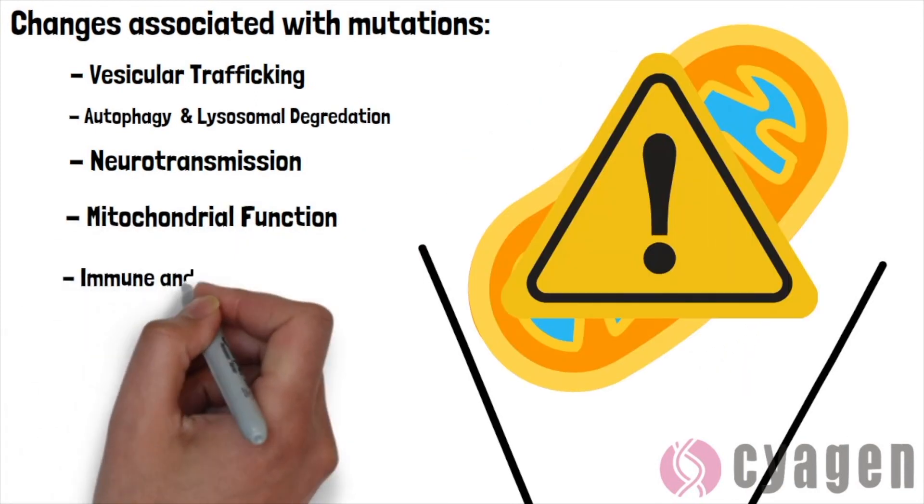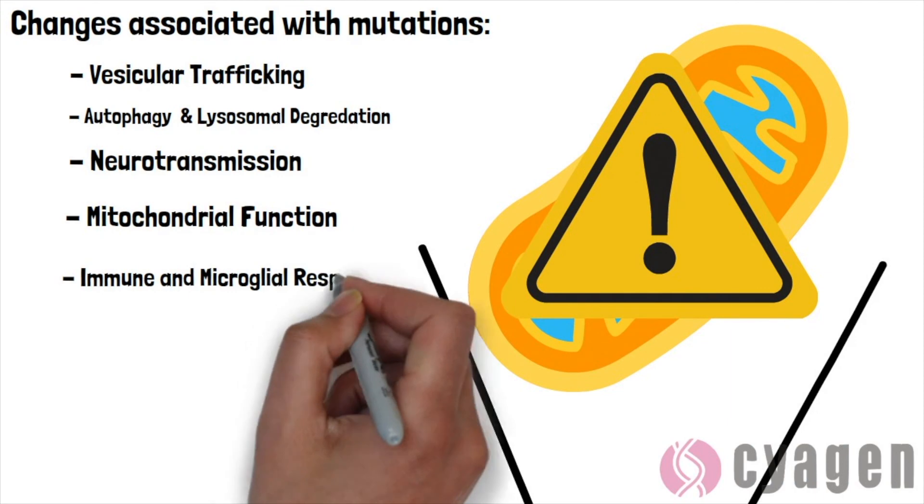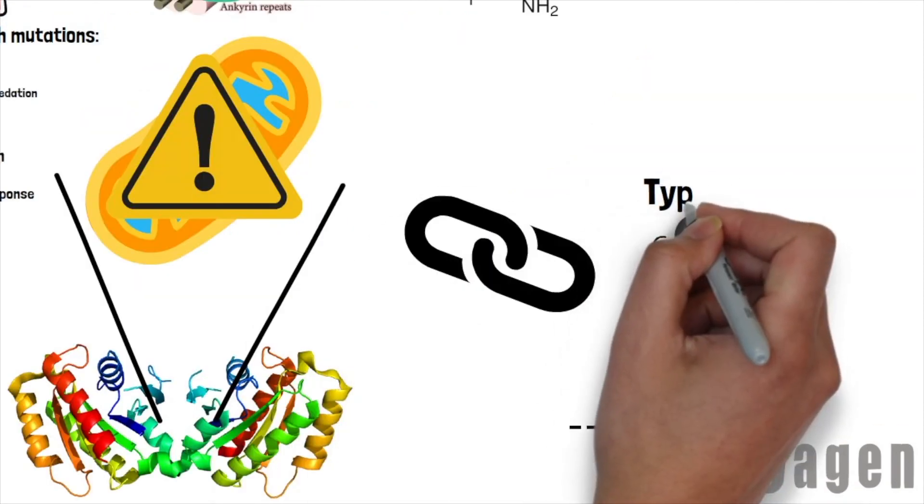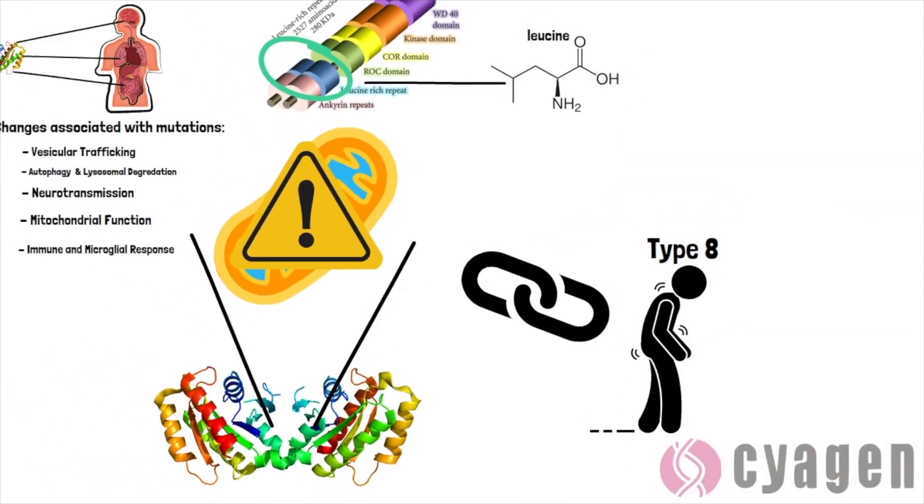Mutation in the gene is associated most closely with Parkinson's disease type 8.